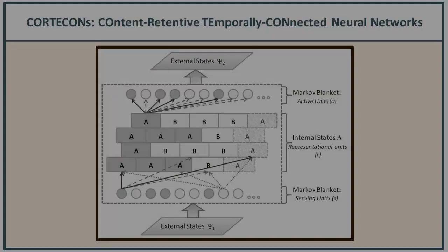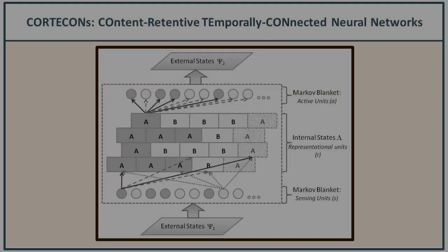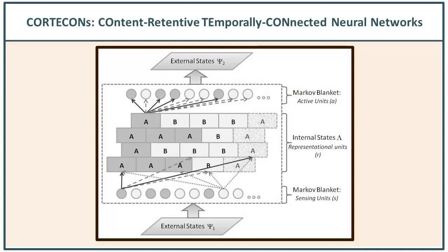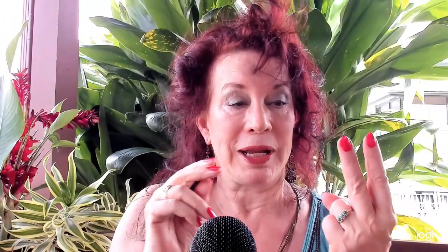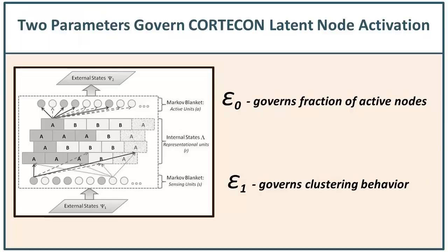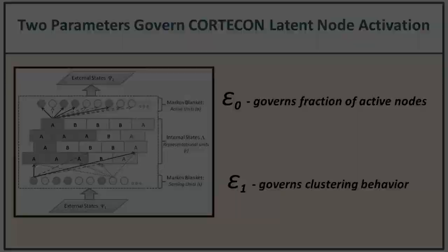Let's quickly take a look at how this applies to corticons — content-retentive, temporarily connected neural networks. We'll specifically look at the latent layer. The internals of this neural network are neurons that become active in a grid pattern, and you can excite groups of neurons, that is, clusters. That all depends on just two parameters: epsilon zero and epsilon one. Epsilon zero controls the fraction of active nodes, and epsilon one controls the clustering.